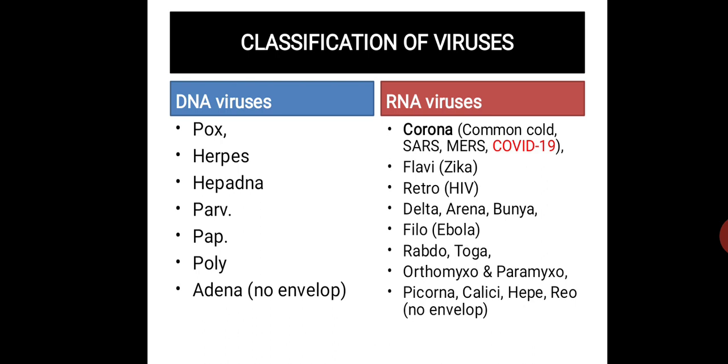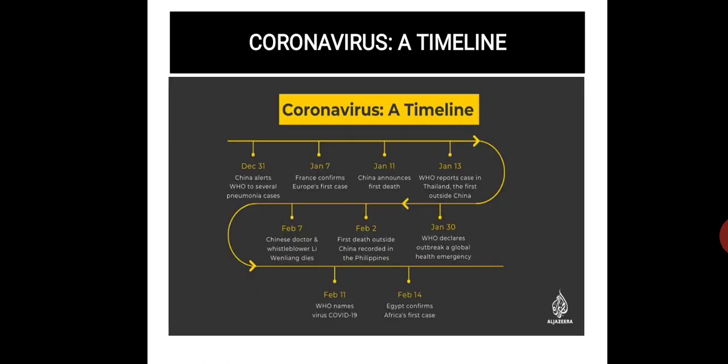Here is the classification of viruses: DNA viruses or RNA viruses. RNA viruses include coronavirus, common cold, SARS, MERS, and COVID-19 — the seventh disease from the coronavirus family. The first case was shown in December 31, 2019, when China alerted WHO to several pneumonia cases, which further spread to other countries and all over the world.